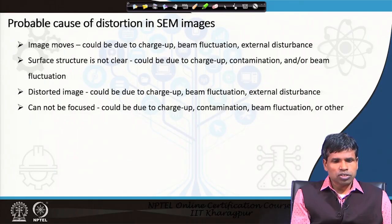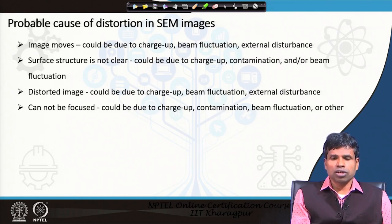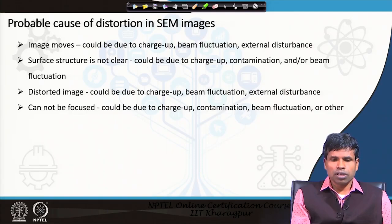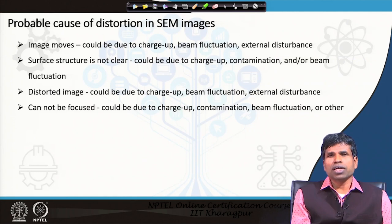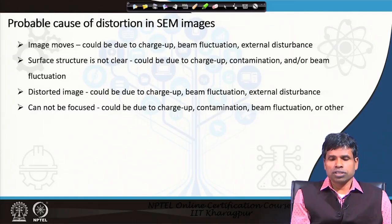The second probable cause of distortion is that the surface structure is not clear. Surface structure will certainly not be clear if the sample is insulating, because charge build-up on the surface prevents us from getting the necessary signal. This can also happen due to contamination or beam fluctuation. Third is a distorted image due to charge-up, beam fluctuation, and external disturbances. Fourth, if you are unable to focus — this could be because charging up prevents us from seeing the actual surface, or due to contamination and beam fluctuation.